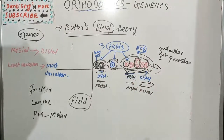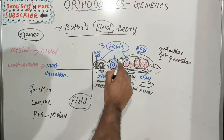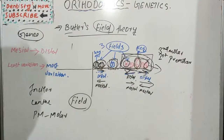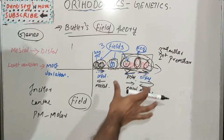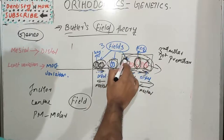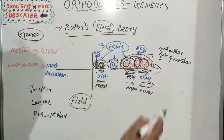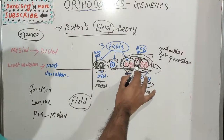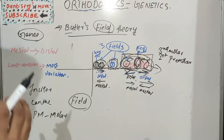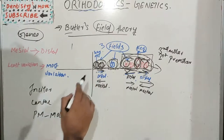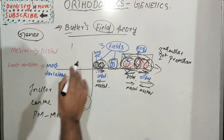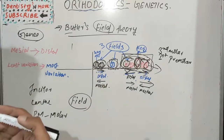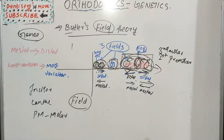The third molar and first premolar are at the distal extreme end from the key tooth. Towards the key tooth, the variability decreases — that is why the first molar has become the more stable key tooth. Similarly, in the incisor region, the central incisor is the key tooth, and the distal tooth — the lateral incisor — shows more variability in size and shape.